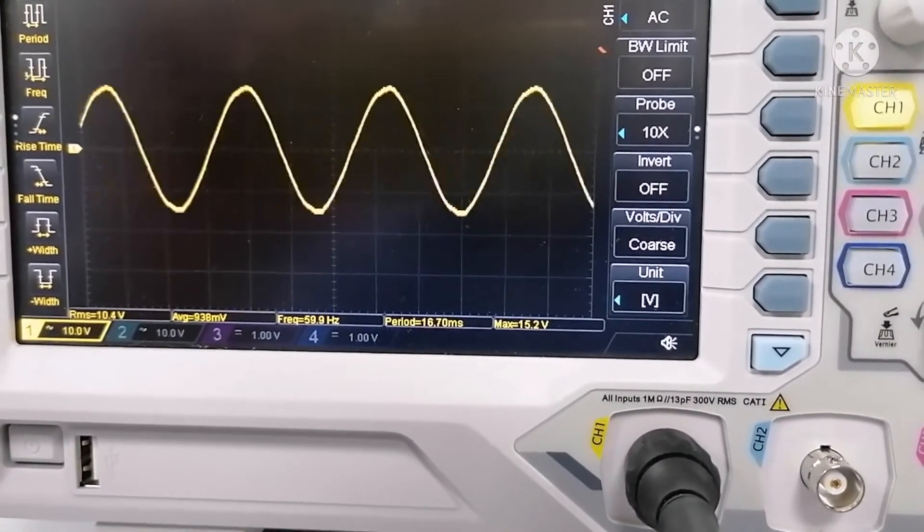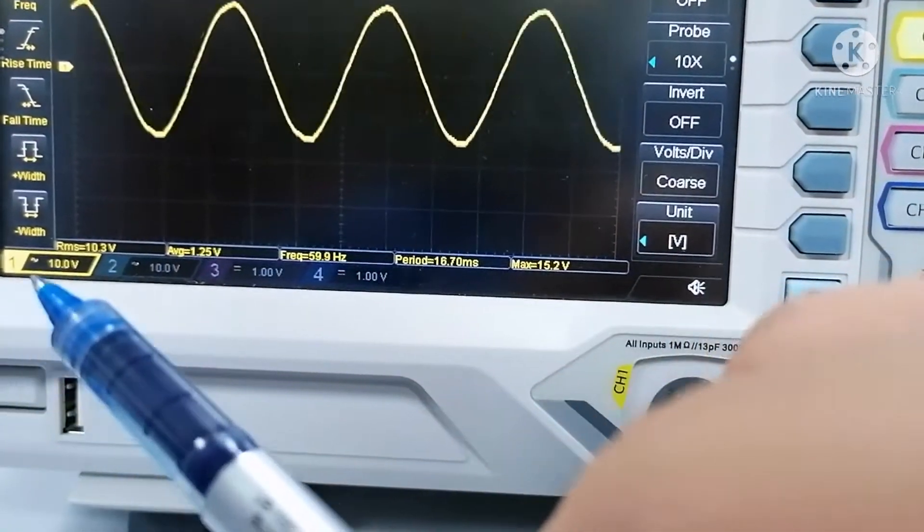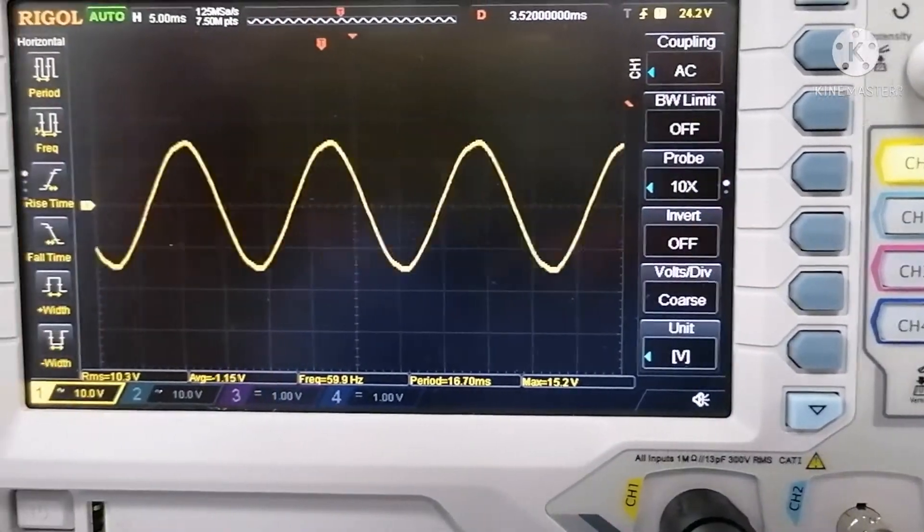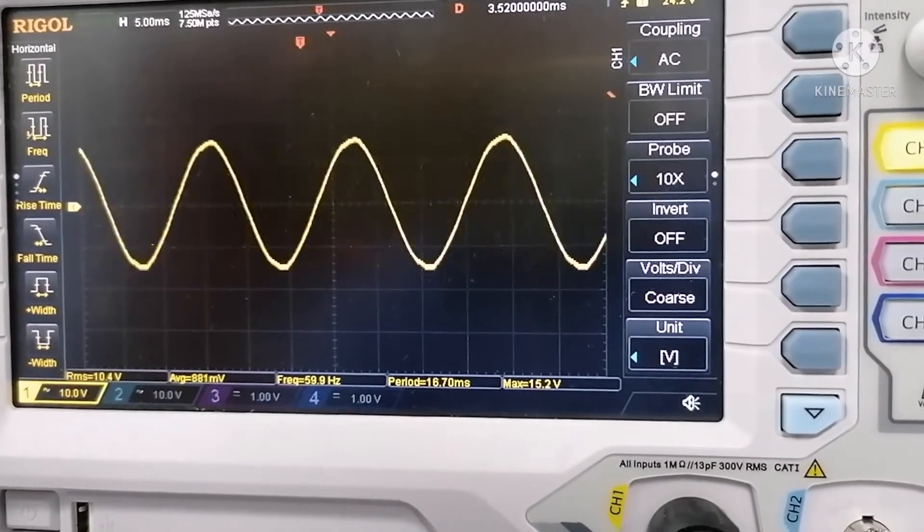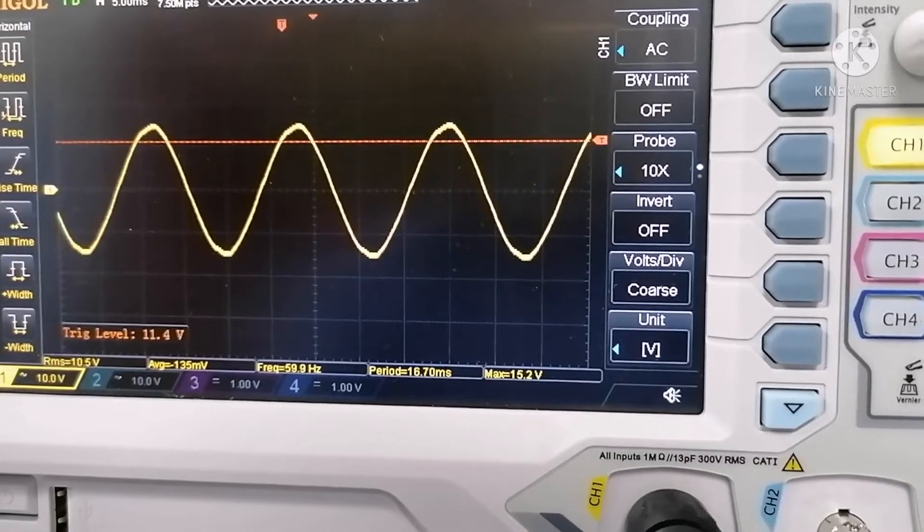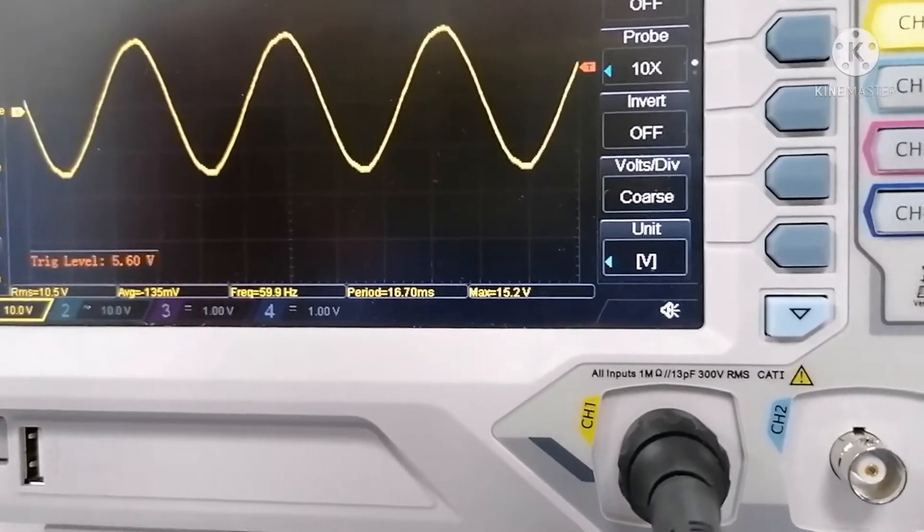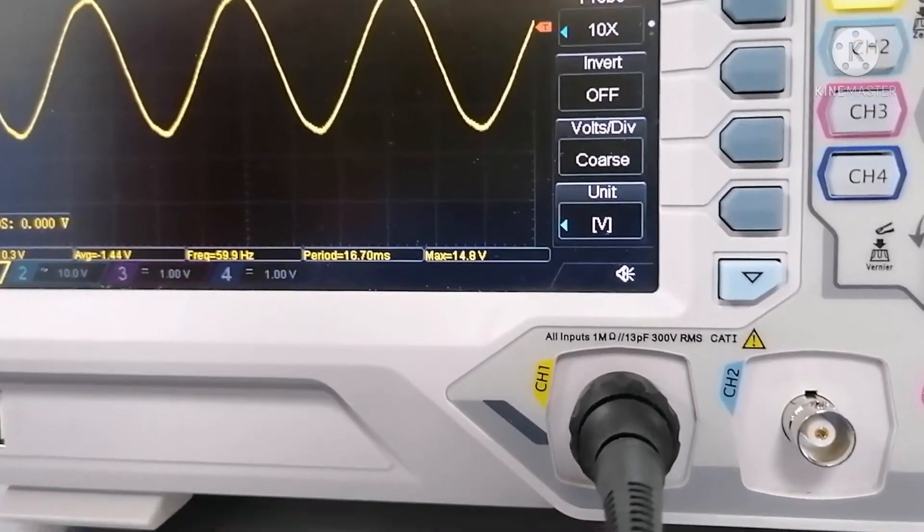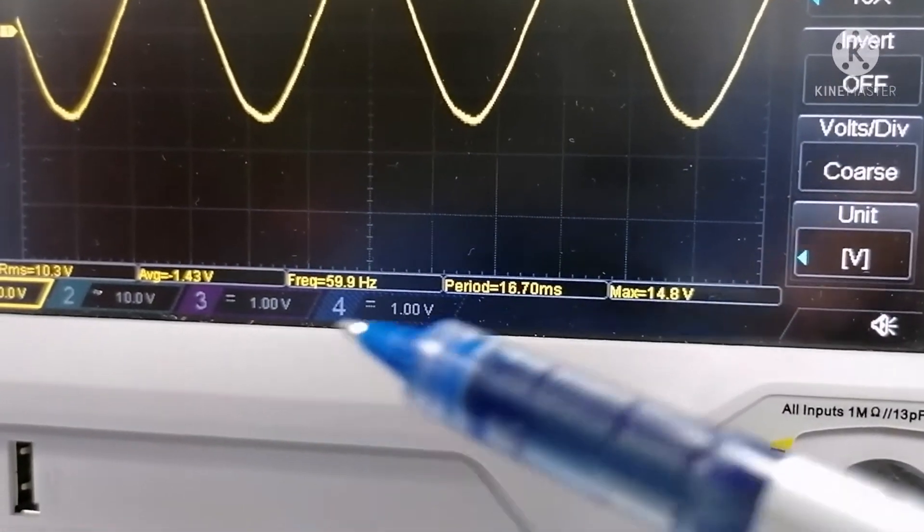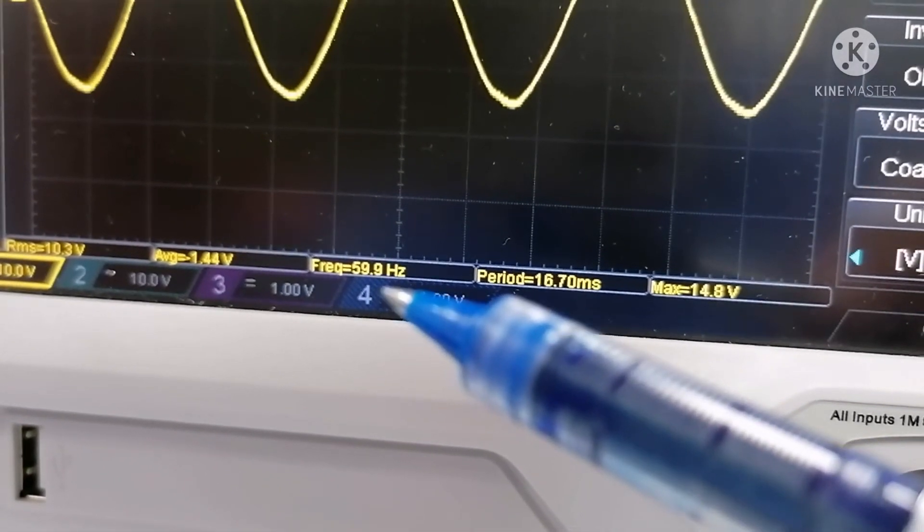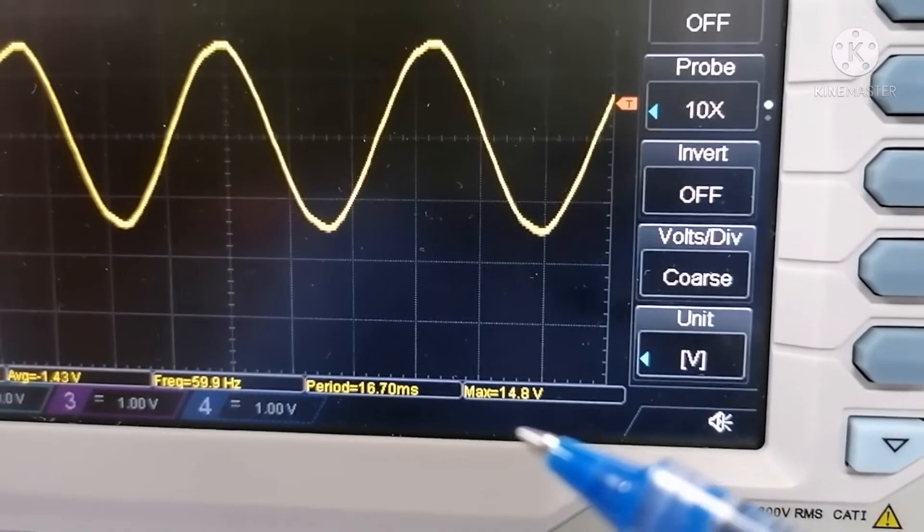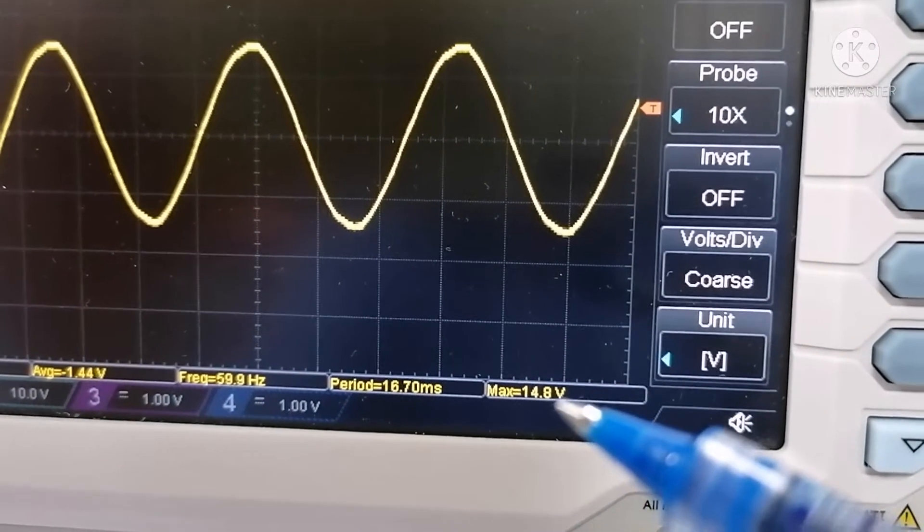Here is it. I set the voltage division to ten volts per division. And for you to be able to see the waveform properly, I will adjust the trigger like this to catch the waveform. Now I confirm that the frequency of the input voltage is 60 Hertz. That's correct because our AC line has 60 Hertz frequency. And we have the maximum voltage is 14.8 or 15 volts AC.